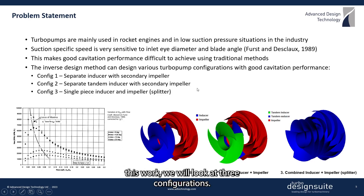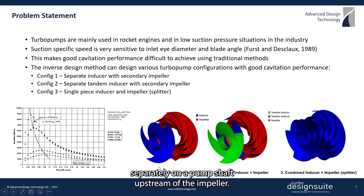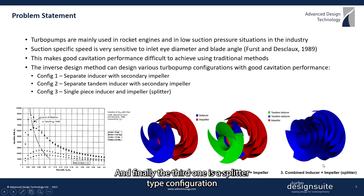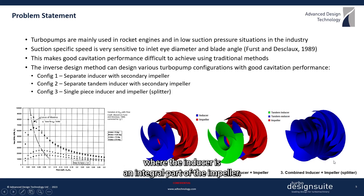In this work, we will look at three such configurations. In the first configuration, the inducer is mounted separately on a pump shaft upstream of the impeller. The second one is similar, but the inducer is split into a tandem inducer and a tandem extruser component. Finally, the third one is a splitter-type configuration where the inducer is an integral part of the impeller.